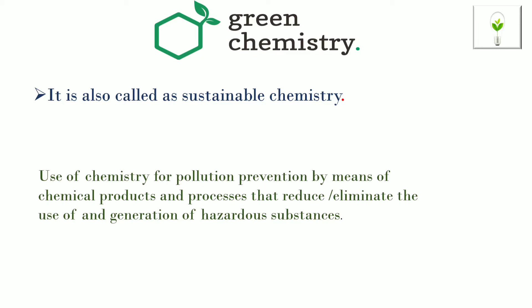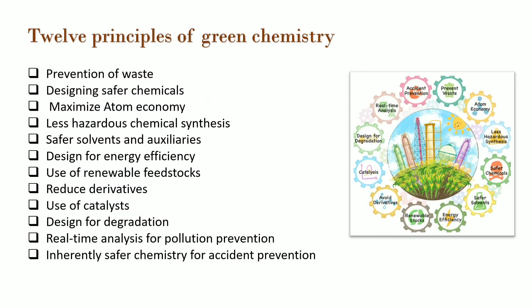The green chemistry program supports the invention of more environmentally friendly chemical processes which reduce or even eliminate the generation of hazardous substances. Another definition is: the design of harmless processes to produce various hazard-free products, which has emerged as a new branch commonly known as green chemistry. There are 12 principles of green chemistry, developed by Anastas and Warner.